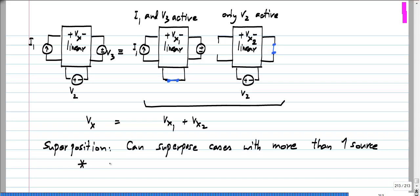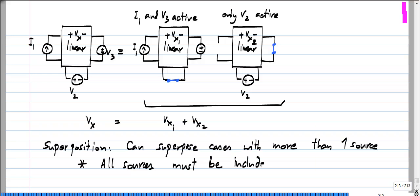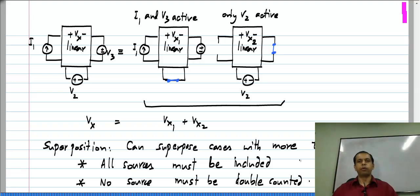The important points as I mentioned earlier, here all sources must be included and no source must be double counted. So, that is all, this is quite obvious and you would probably realize that this is true, but I explicitly mentioned it anyway.